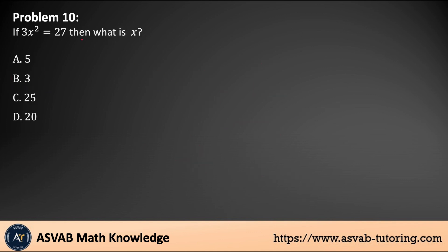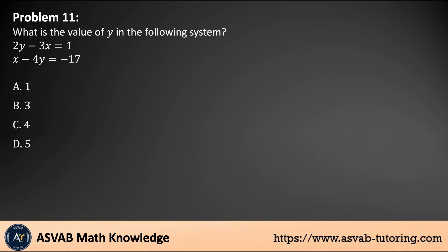Problem number ten: if 3x² equals 27, what does x equal? Divide both sides by 3 — the 3s cancel, giving x² equals 9. Then x equals the square root of 9, which is plus or minus 3. It could be either negative 3 or positive 3, but if only positive is given as an answer choice, circle that one. Note that negative 3 is also a valid answer mathematically.